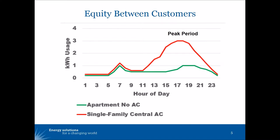There are also benefits in the form of equity between customers. Here I've shown in green the daily load profile for an illustrative apartment that does not have air conditioning, compared with the hourly consumption of a single-family home that has central air conditioning. If we superimpose the peak period on this, we see that the single-family customer is using a much higher percentage of their daily consumption during the peak period.